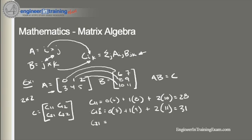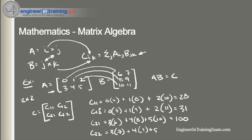Let's illustrate these. 3 times 6 plus 4 times 8 plus 5 times 10, which is equal to 100. And then C_22 is going to be equal to 3 times 7 plus 4 times 9 plus 5 times 11, which is equal to 112. So these are our four elements in our new matrix C.